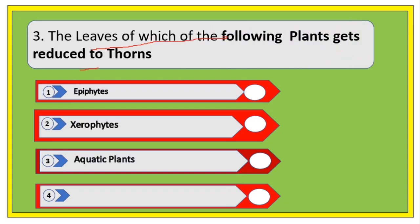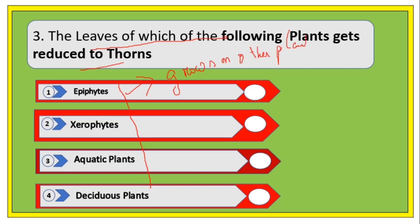Next question: the leaves of which of the following plants get reduced to thorns? Before the answer, let me explain important plant types. Epiphytes grow on other plants — remember this. Xerophytes require little water to grow; for example, desert plants can survive on very little water.